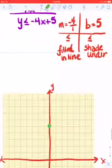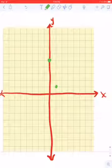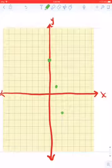My slope here is negative 4 over 1. So I'm going to go down 4 and over 1. And I'm going to keep going until I run out of spots.